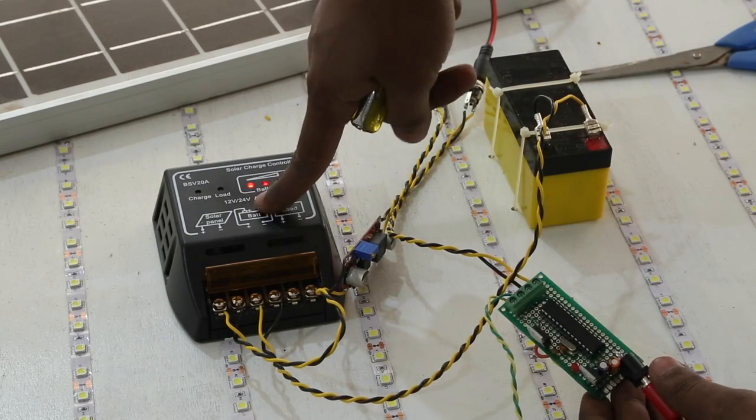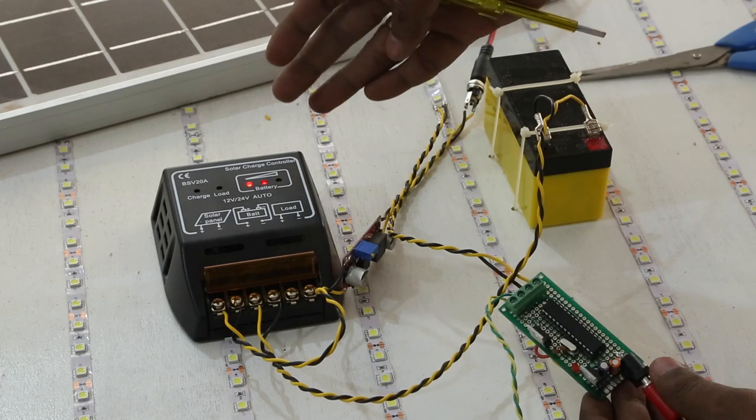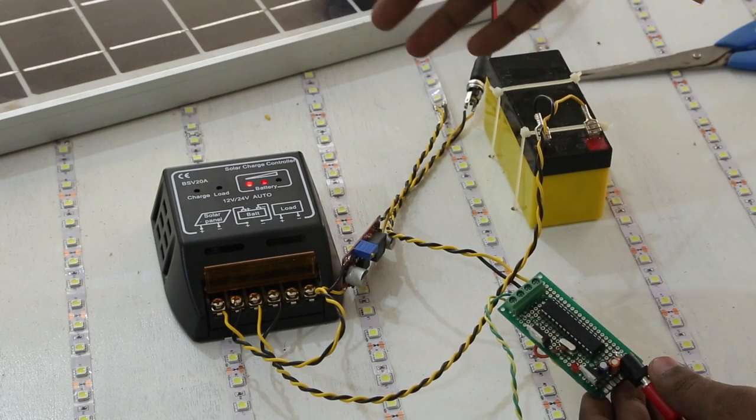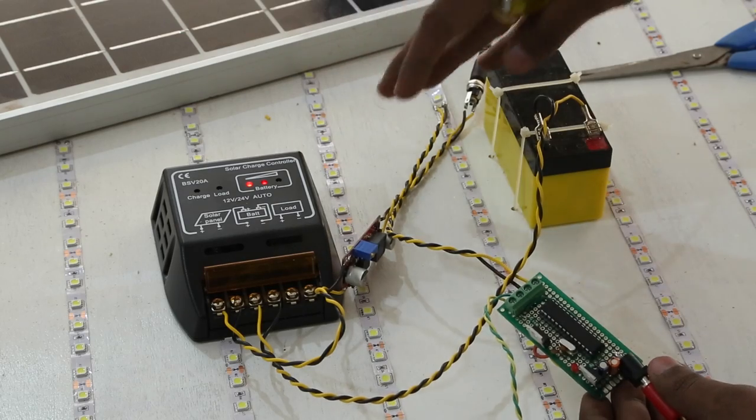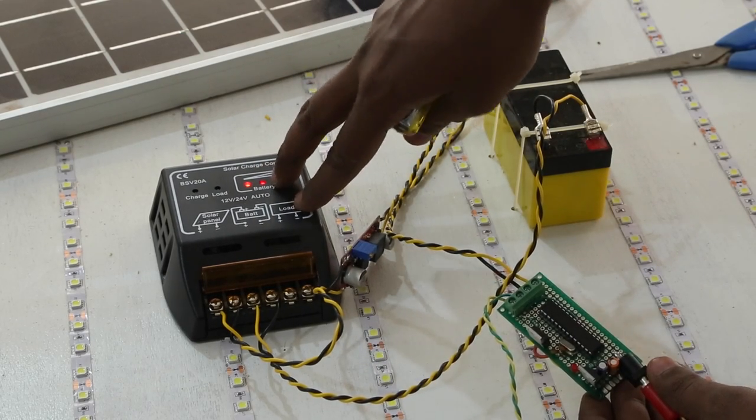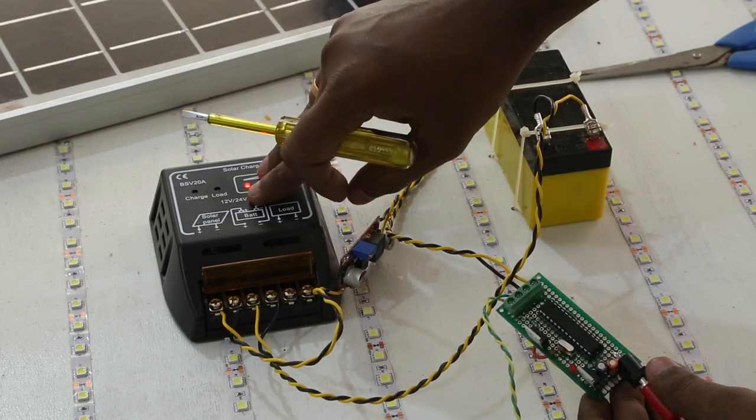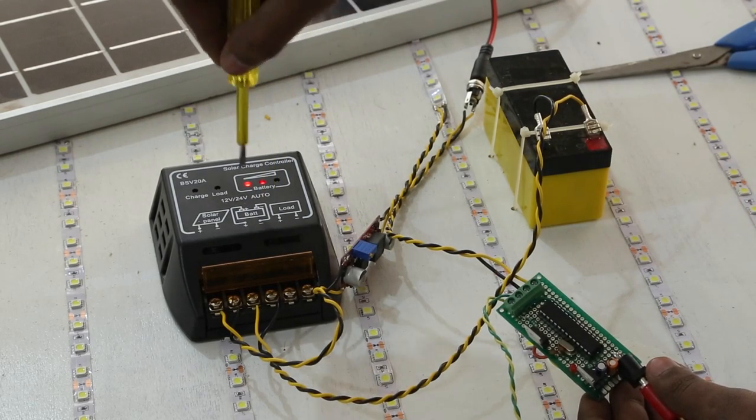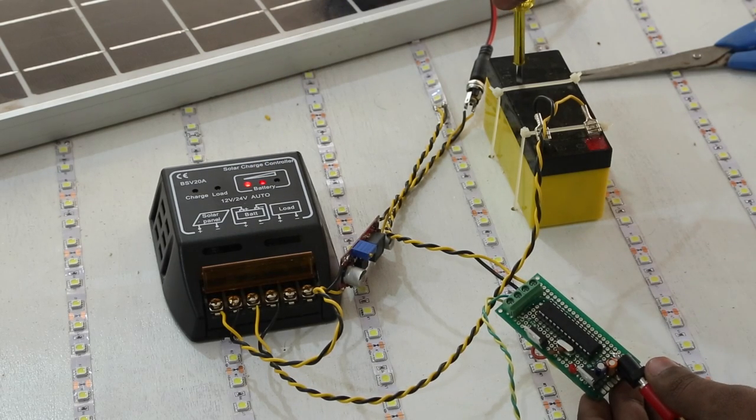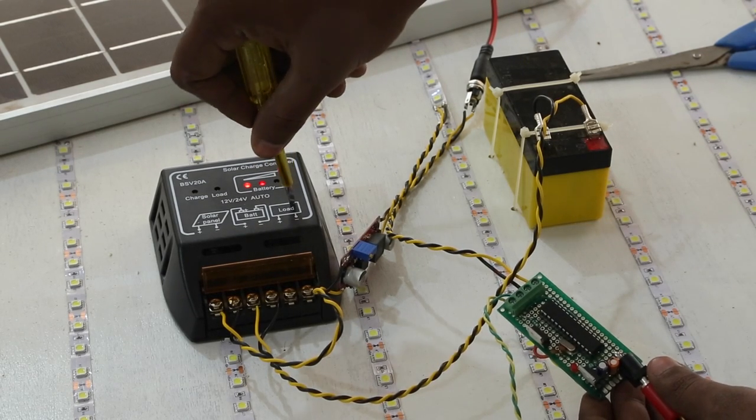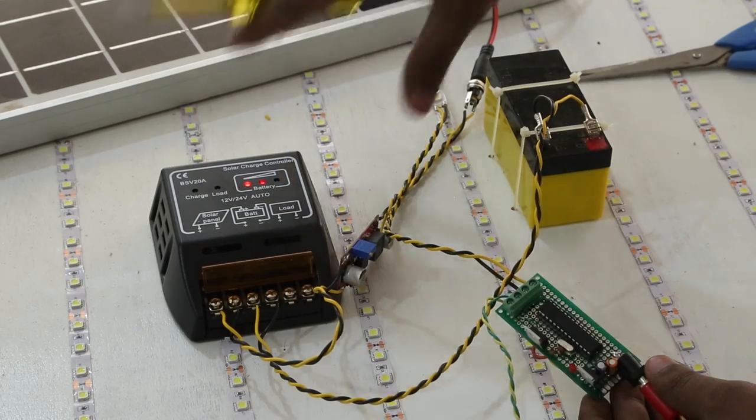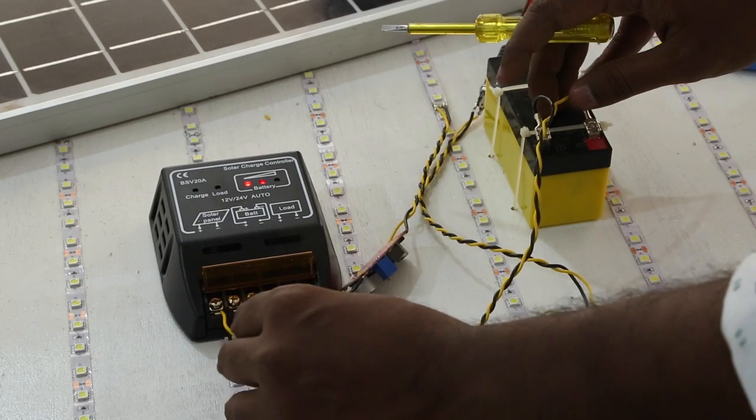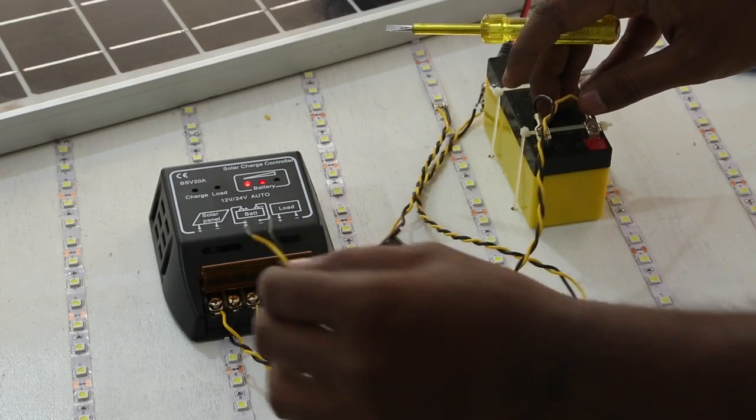This is a PWM charge controller. There's also MPPT charge control, which is more efficient, but that's for higher wattage batteries. This is a small project, so a PWM solar charger is more than enough. It gives constant charging voltage and protects from over-discharging. This charge controller also has short-circuit protection. That's why I'm connecting these terminals to the load terminals, not directly to the battery.